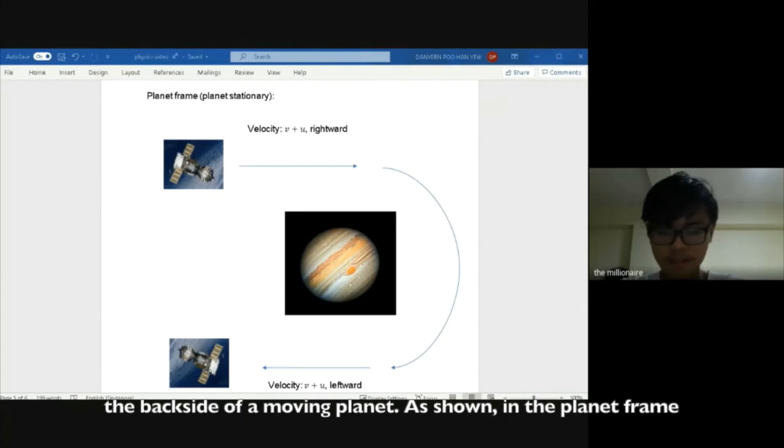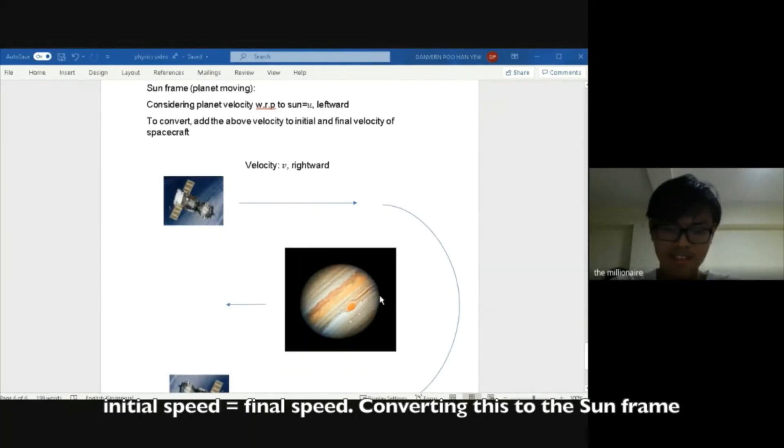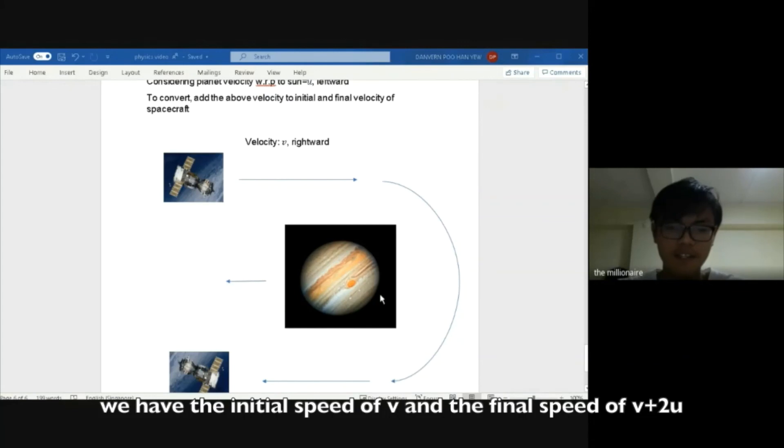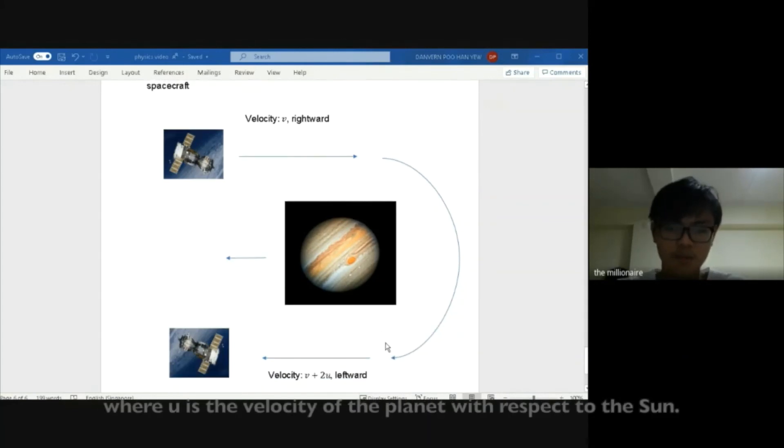Consider the ideal arrangement where a spacecraft moves around the backside of a moving planet as shown. In the planet frame, the spacecraft initially moves with velocity of v plus u rightward and a final velocity of v plus u leftward. As the initial speed equals final speed, converting this to the sun frame, we have the initial speed of v and the final speed of v plus 2u, where u is the velocity of the planet with respect to the sun.